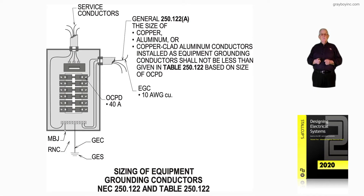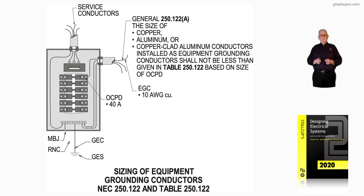This illustration deals with the sizing of equipment grounding conductors in accordance with NEC 250.122 and Table 250.122. This deals with Section 250.122 and Table 250.122 when we're selecting and sizing an equipment grounding conductor based upon the size of the overcurrent device and other issues that may develop.